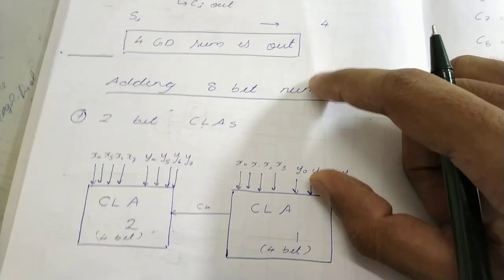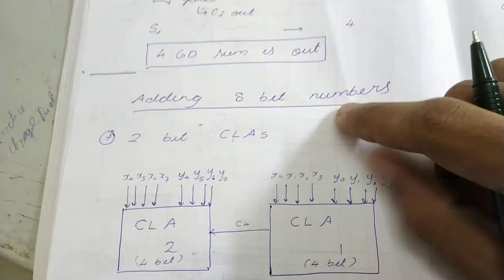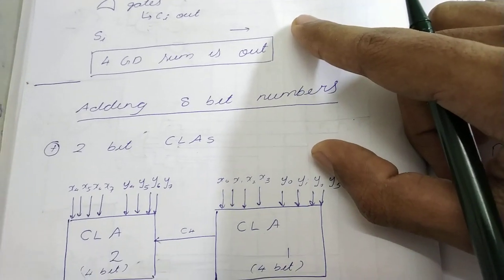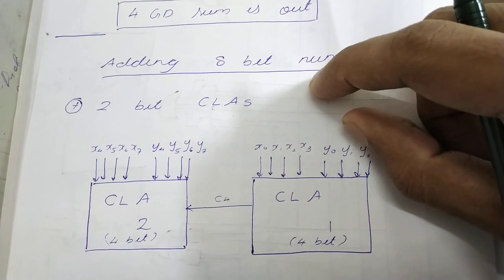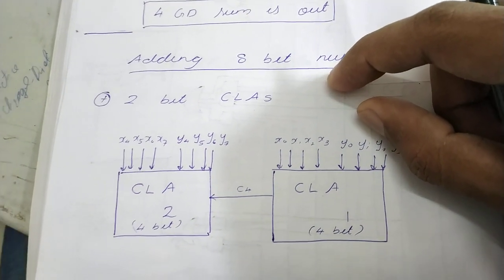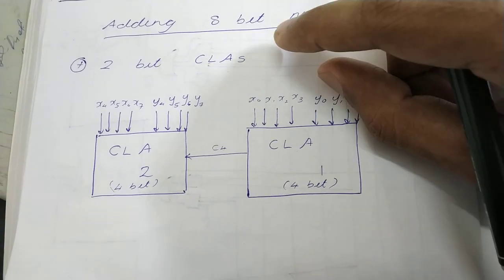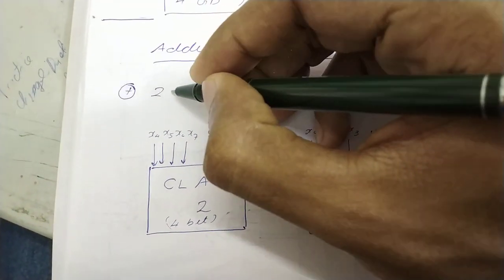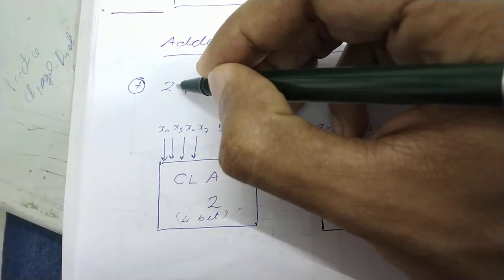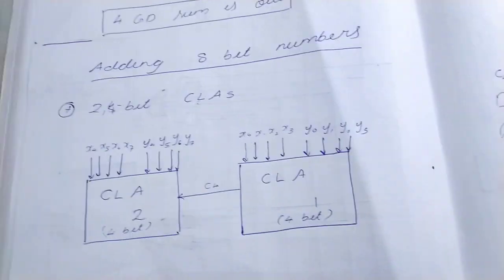Now we do how do we add two 8-bit numbers. The CLA that we did before is for 4-bit numbers. Now how do we add 8-bit numbers. So how to do is two 4-bit CLAs. So two 4-bit CLAs.